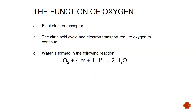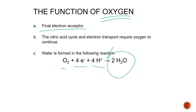The very important factor for all of this to occur is that oxygen needs to be present, because it is the final electron acceptor. The citric acid cycle and electron transport require oxygen to continue — if oxygen were not present, the whole process would stop. With oxygen, it binds with four electrons and four hydrogens, and one of the byproducts is water.